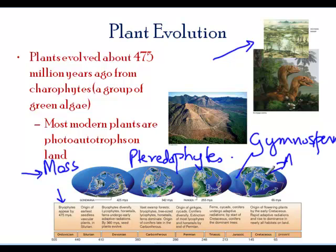And then came the last group, called angiosperms. These are the modern day flowering plants. This is just an overview of the milestones of plant evolution.